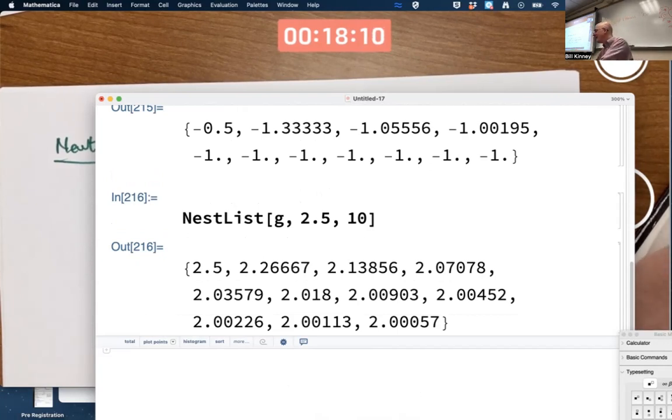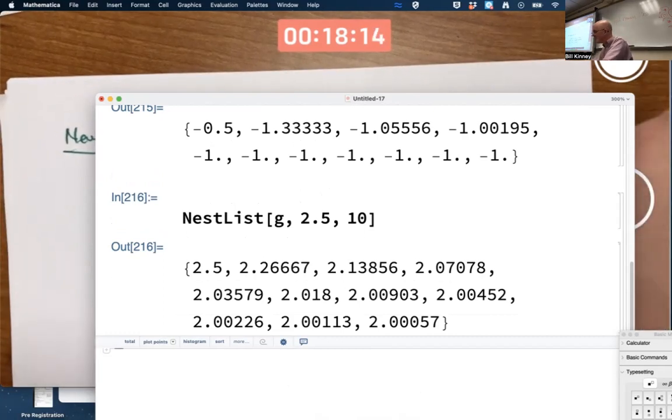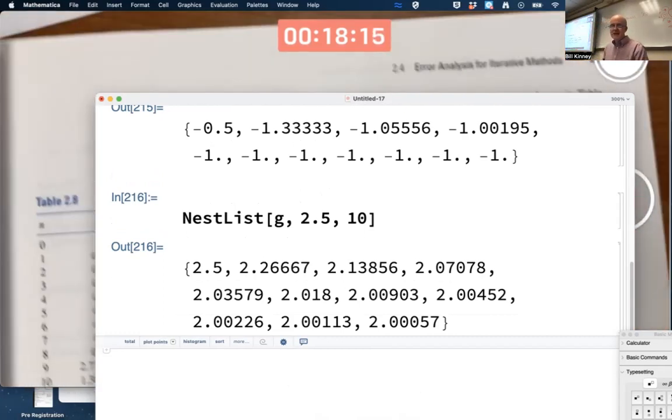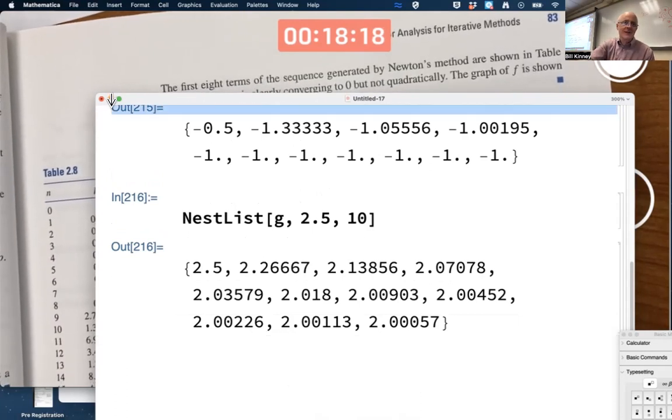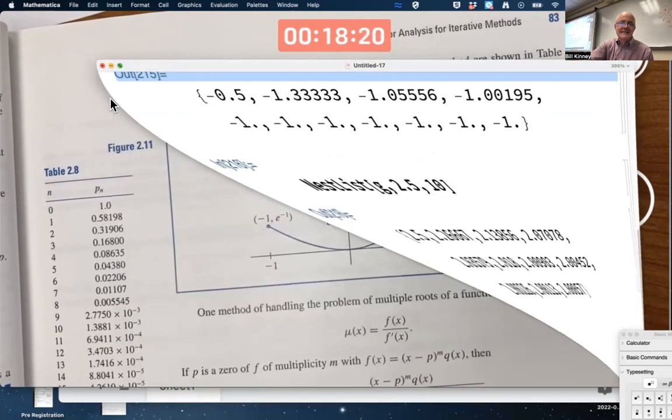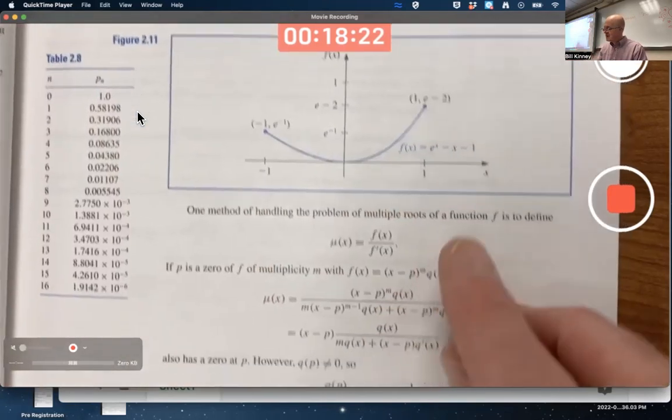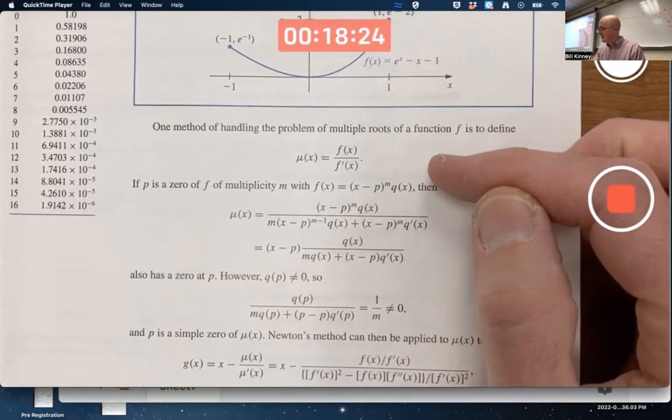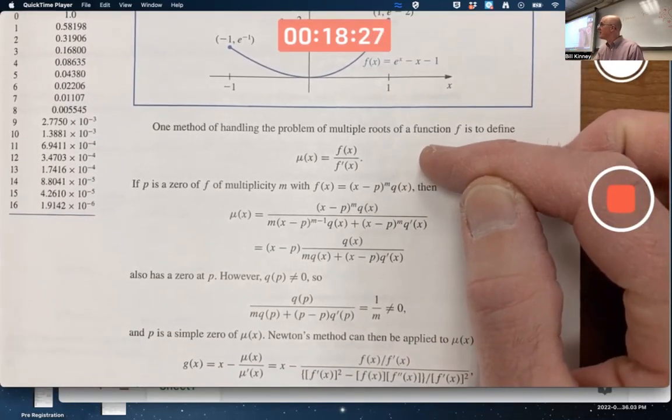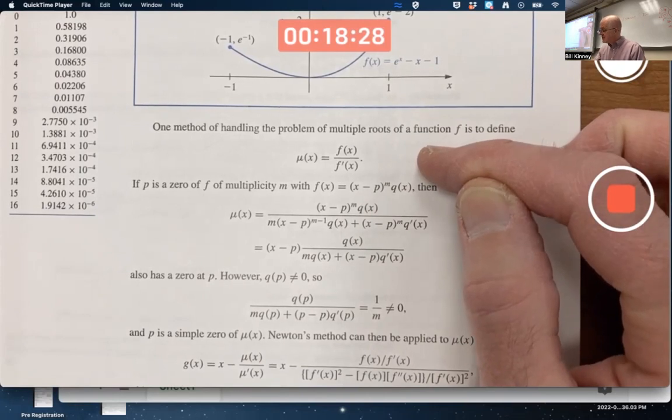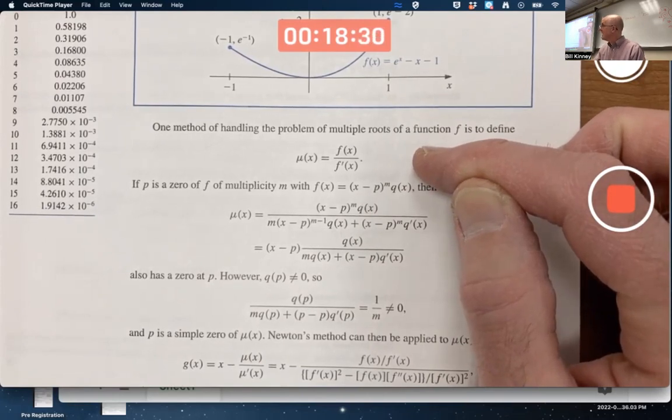What we have with the modified Newton's method is a situation where we can converge faster again. The motivation is, I'm not going to test you on this motivation, but the motivation is to create a new function mu(x) that also has a root at the same place f does.